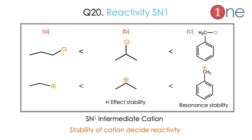The last question is about SN1 reaction rate. Write the carbocation intermediate directly and judge which is most stable. Resonance stabilizes much better than the +I effect. The benzyl cation is stabilized by the benzene ring most effectively. Next is the cation stabilized by two methyl groups via the +I effect. The least stable is the ethyl cation. The SN1 intermediate is the cation — stability of the cation decides the reactivity.